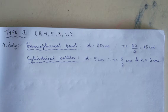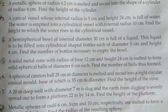They are asking us to find number of bottles. So the formula here, instead of saying volume 1 is equal to volume 2, what we are going to do is number of bottles is equal to volume of hemispherical bowl divided by volume of cylindrical bottles.